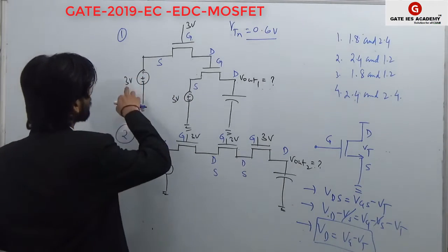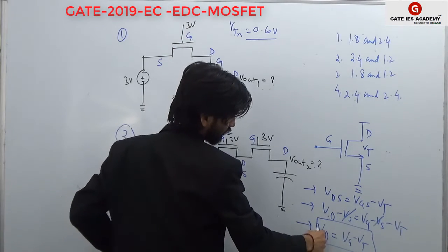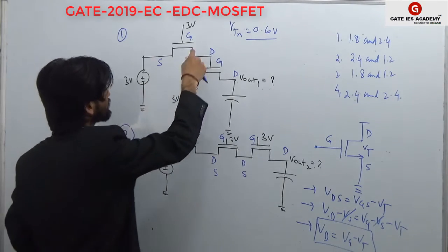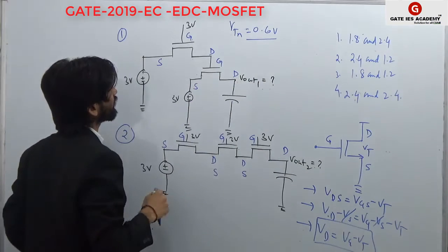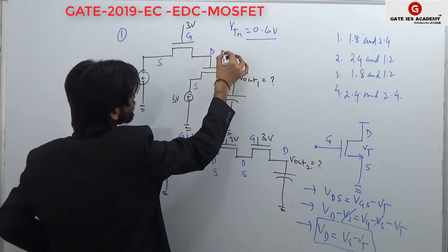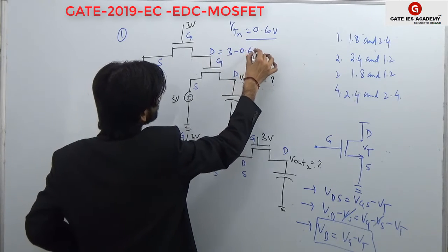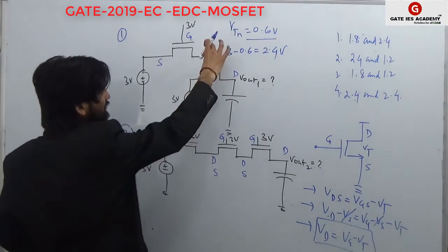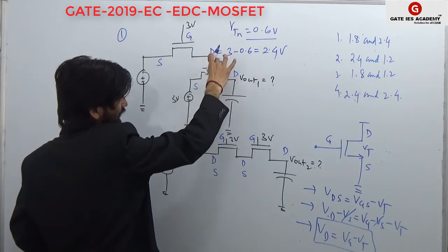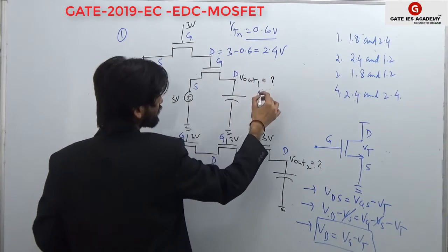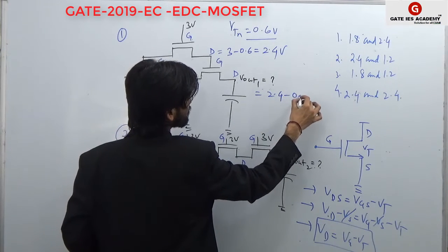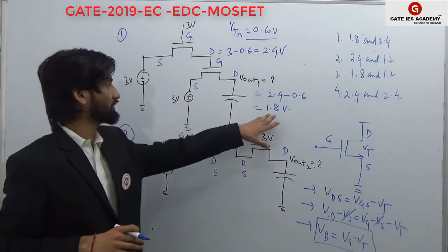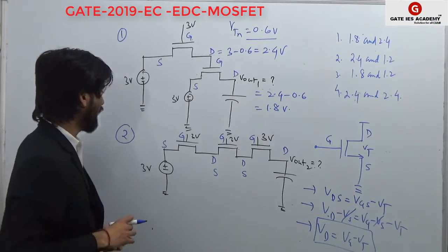So, as I said, your Vd is independent of the source. The threshold voltage is 0.6. So 3 minus 0.6 will be 2.4. Again, this drain voltage is given at the input of the next NMOS. So 2.4 will be here, and we can say 2.4 minus 0.6, so it will be 1.8 volts. For the first circuit, the answer Vout1 will be 1.8.